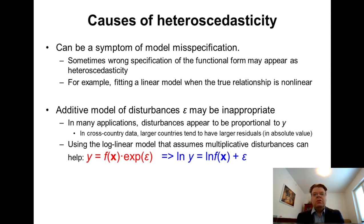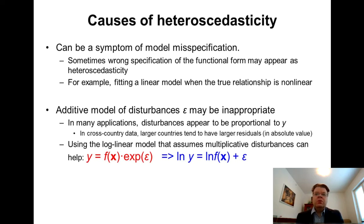Another type of misspecification is that in the linear regression model we assume that the error term epsilon enters the model in an additive form — we have plus epsilon as the last term. But it could also be that a multiplicative formulation might be more appropriate, as indicated in the red color formula. In that kind of situation, it might help to use a logarithm transformation. Taking the natural logarithm of both sides, the error term then enters in an additive form. Indeed, the use of logarithms is often motivated by wanting the error to be proportionate to the size of the units.